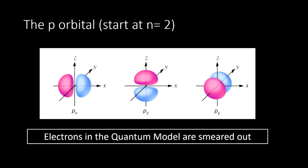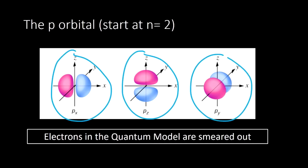There are other ways electrons can be smeared out. Electrons can be smeared out as a P orbital, and these P orbitals come in three different orientations — smeared out to the left and right, up and down, and forward and backward around the nucleus. One note: P orbitals don't appear until the n equals 2 level from our Bohr model, so until we get to the second ring out, we don't see any P orbitals.